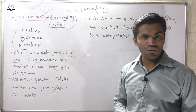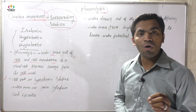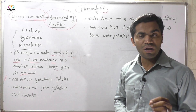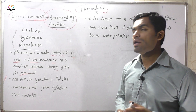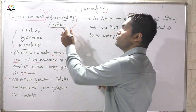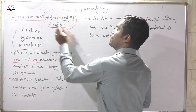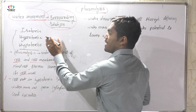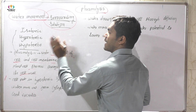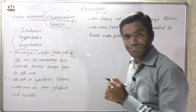The reason we discuss the types of solutions is that plasmolysis only happens due to the surrounding solution, and that surrounding solution may be isotonic, hypertonic, or hypotonic.